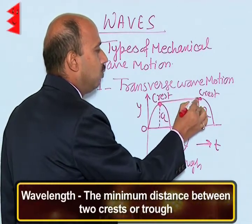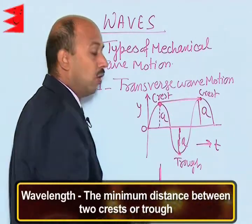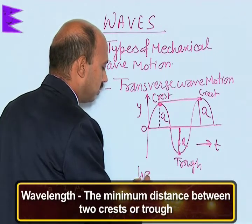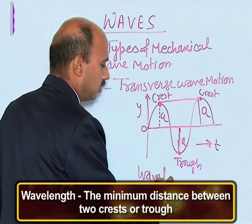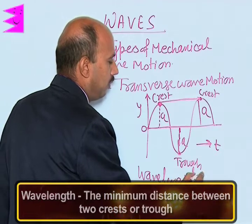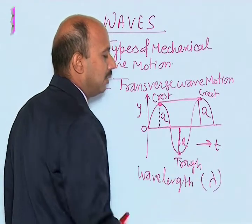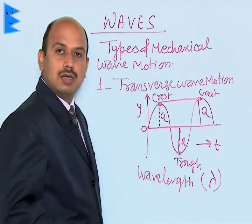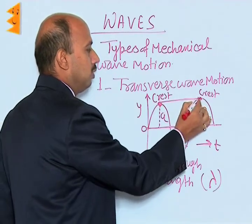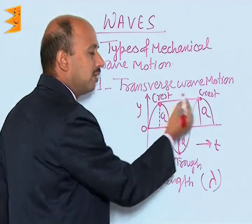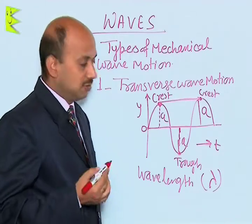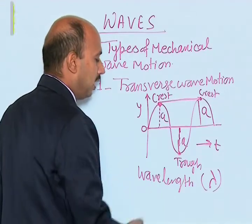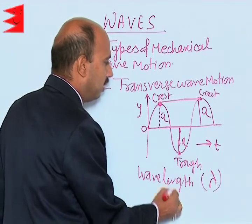The minimum distance between two consecutive crests or two consecutive troughs is known as wavelength. Wavelength is represented by the symbol lambda (λ) and is measured in meters.